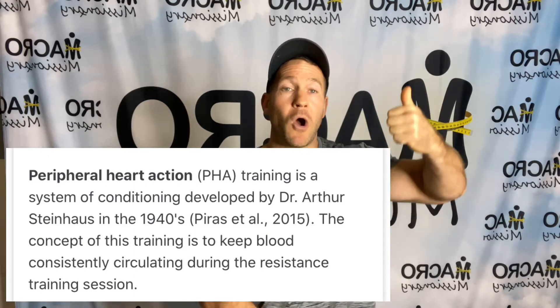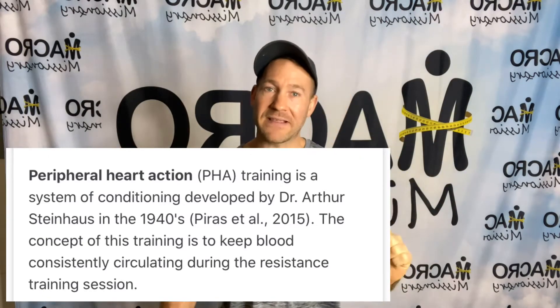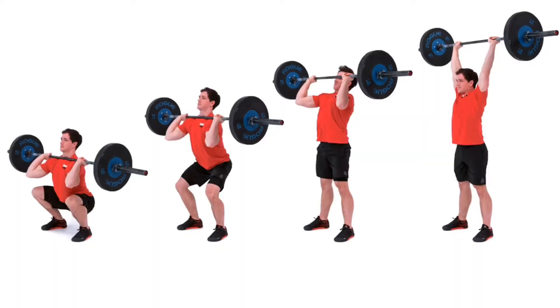Number two: peripheral heart action. This is basically a fancy way of saying getting your heart to pump blood into opposing limbs at the same time. This is very advanced and very tough — if you do this with new clients or haven't done it yourself, it's a good way to pass out, so be really careful. A great example is a thruster — a squat combined with a simultaneous overhead press. What's happening is the heart has to pump blood to both the lower limbs and the upper limbs at the same time, which is very difficult. The heart has to work a lot harder, making it extremely metabolically demanding.